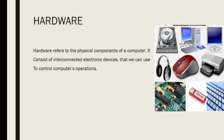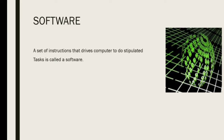Hardware consists of input devices and output devices. Input devices include keyboard and mouse. Output devices include printer and speaker. Software is a set of instructions that drives a computer to do stipulated tasks. Examples of software are system software, application software, and utility software. These instructions tell the hardware how to perform a task.